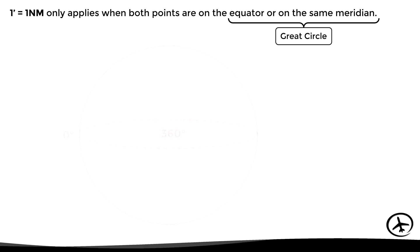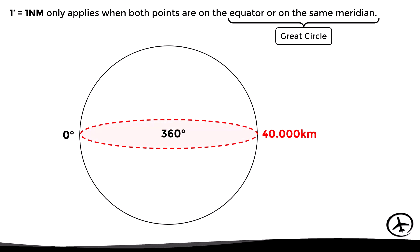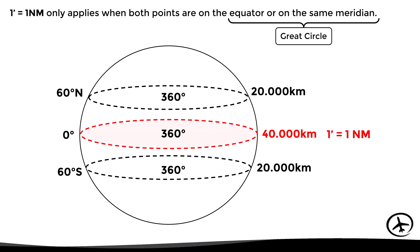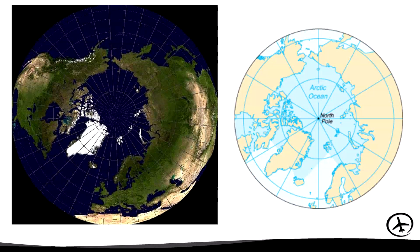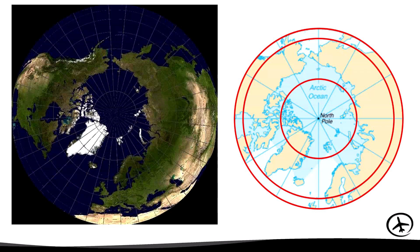Let's see why. At the equator, the circumference of the Earth is 40,000 kilometers, which means that here each minute of arc equals 1 nautical mile. However, if we move towards the poles — for example at 60 degrees of latitude north or south — the circumference of the Earth at this point is only 20,000 kilometers, which means that here each minute of arc equals only 0.5 nautical miles. And if we move further towards the poles, the circumference becomes smaller and smaller. This can be seen more clearly if we look at the Earth from one of its poles: the circumference of the parallels gets smaller and smaller as we approach the pole, so that the same angular distance in degrees and minutes will be equivalent to a smaller linear distance in nautical miles.